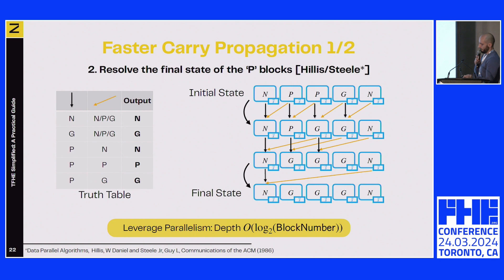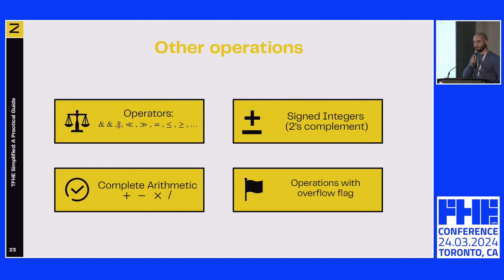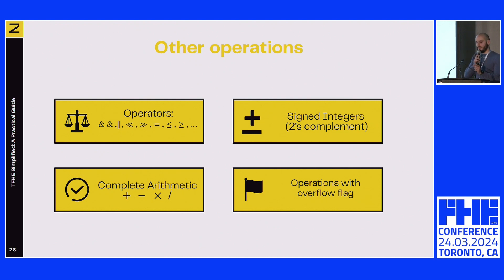Using this representation and carry propagation, we can generate all operators to mimic exactly all programming language constructs: comparisons, bitwise operations, and full arithmetic including addition, multiplication, and division. All these operations use unsigned integers, but we can apply two's complement for signed integers as well. We can also detect overflow: since everything is encrypted and we don't know if an overflow occurs, we use an encrypted flag containing this information, so the user can determine at the end of execution whether an overflow occurred.